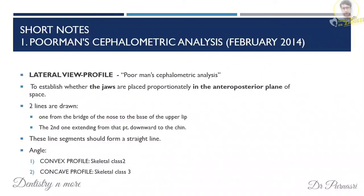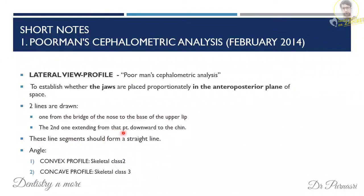Short note: Poorman's cephalometric analysis. The lateral profile photograph of the patient is called the poorman's cephalometric analysis — used when no cephalogram is available to diagnose class 2 or class 3 skeletal problems. Two lines are drawn: one from the bridge of the nose to the base of the upper lip, and another from the base of the upper lip to the chin. A convex profile indicates skeletal class 2, concave indicates class 3, and a straight line is normal (class 1).